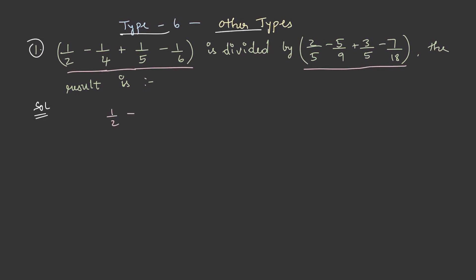So, 1 by 2 minus 1 by 4 plus 1 by 5 minus 1 by 6 divided by 2 by 5 minus 5 by 9 plus 3 by 5 minus 7 by 18. The LCM in the numerator is 60 and we get 30 minus 15 plus 12 minus 10.